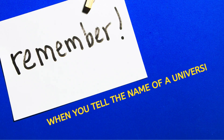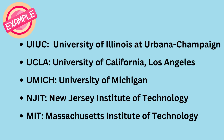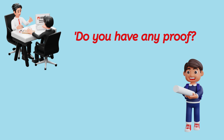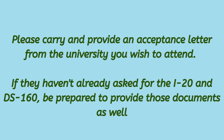Here is my tip: whenever you tell the name of a university, please do not use abbreviations like UIUC or UCLA. Instead, please use full forms. Now, the counsellor officer might ask, 'Do you have any proof?' In response, please carry and provide the acceptance letter from the university you wish to attend. And if they haven't asked for your I-20 and DS-160, be prepared to provide these documents as well.